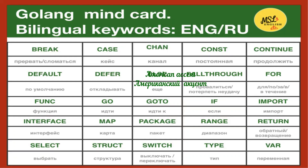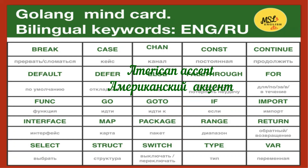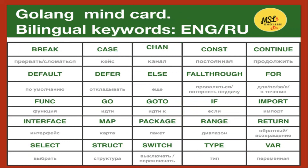Break. Case. Chan. Constant. Continue. Default. Defer. Else. Fallthrough. For. Func. Go. Goto. If. Import. Interface. Map. Package. Range. Return. Select. Struct. Switch. Type. Var.